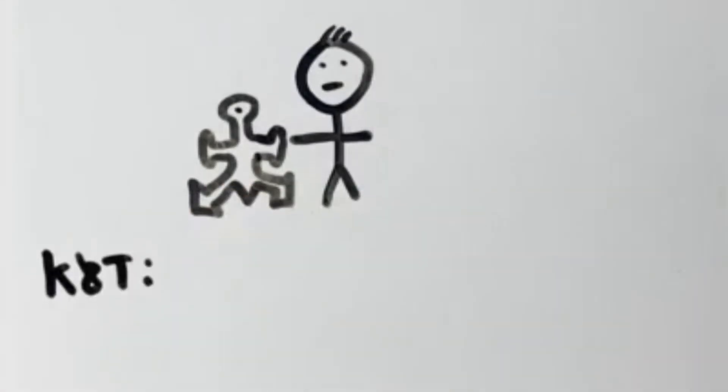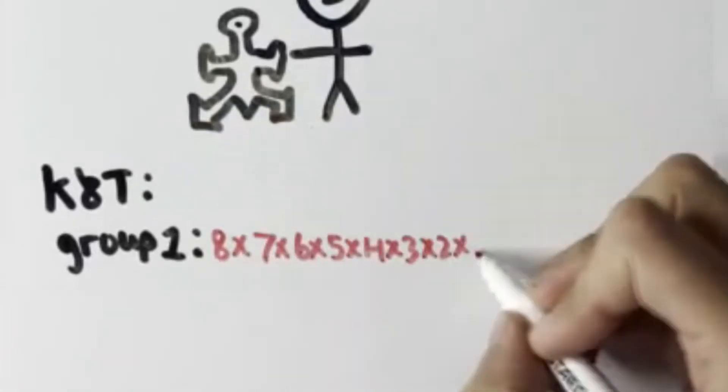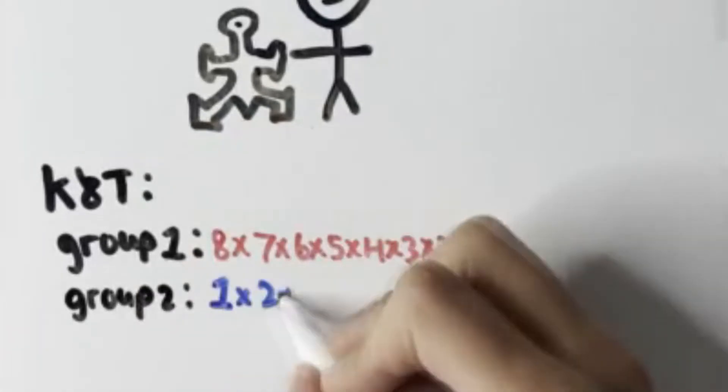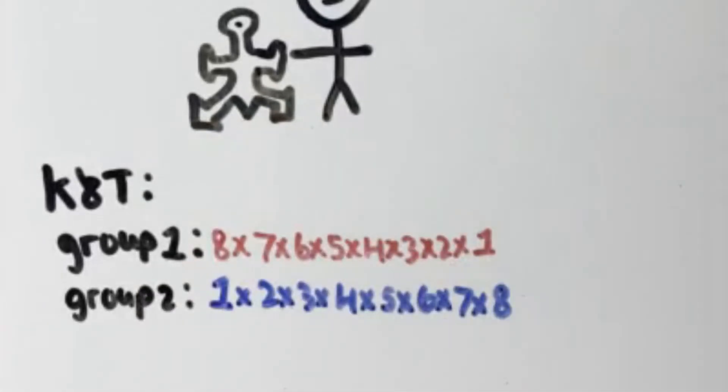For example, Kahneman and Tversky gave students 5 seconds to estimate a math question. One group of students were given this equation. The other group of students were given this equation. The two equations are actually exactly the same. They're simply written with one in ascending order and one in descending order.